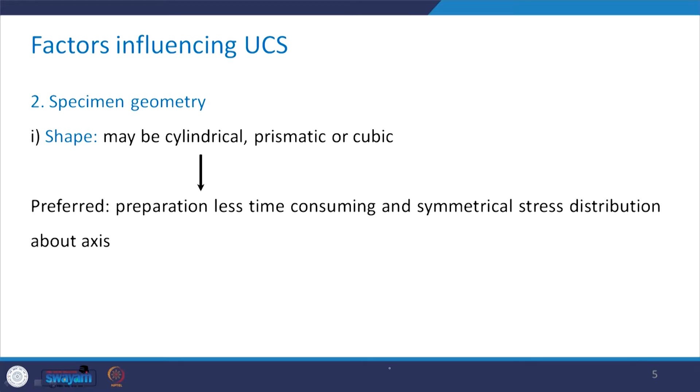Next is specimen geometry. The first consideration is shape: it can be cylindrical, prismatic, or cubic. Cylindrical specimens are preferred because their preparation is less time consuming and the stress distribution about the axis is also symmetric, giving throughout uniform stress distribution. That is why cylindrical specimens are preferred.